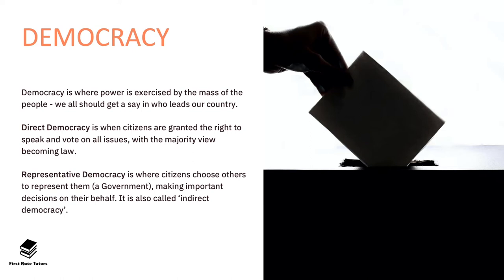There are two types of democracies you need to be aware of. The first is direct democracy, where citizens are all granted the right to speak and vote on all issues, with the majority becoming law. Whilst in theory this is a good idea, in practice it becomes very difficult — almost impossible — if a country has millions of citizens, because every law must be debated and voted on by every single citizen, laws pass much more slowly, and citizens may not be equally informed.